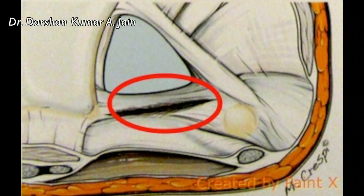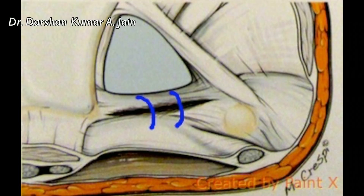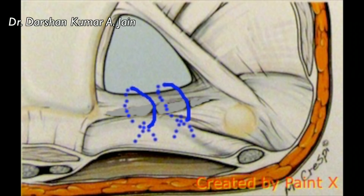I'll be demonstrating the capsular repair at the dorsum, which is repaired using the needle and PDS by two simple sutures as shown here. There are various suturing techniques; these are the simplest ones.